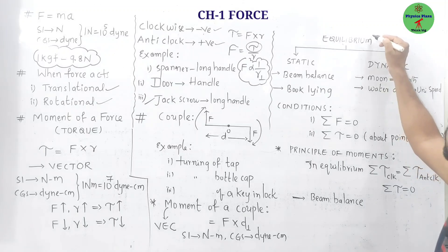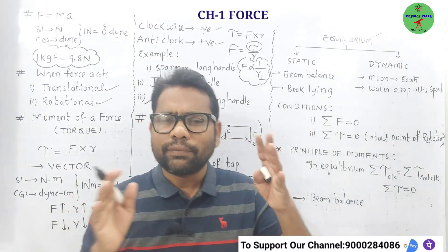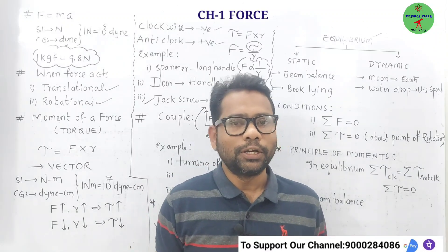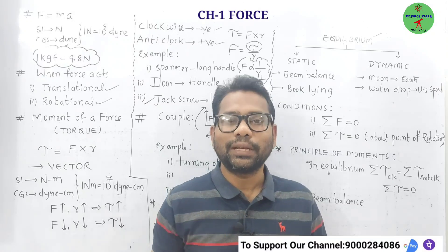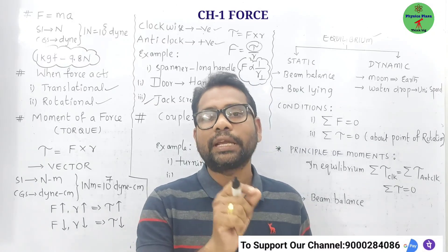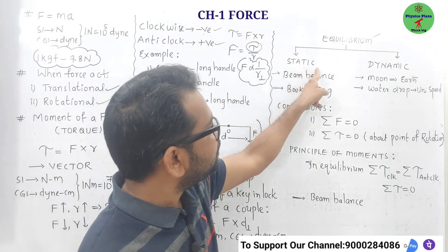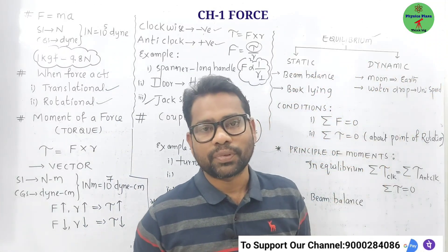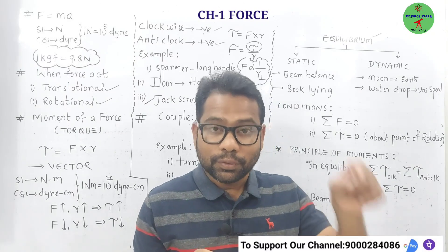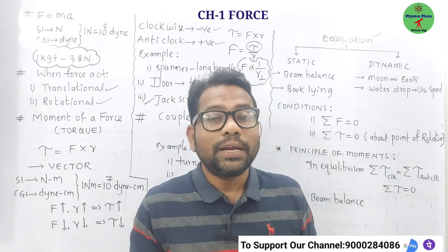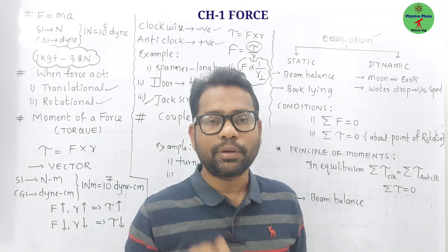Now, come to equilibrium. What is equilibrium? Several forces acting on a body do not change either its state of rest or state of uniform motion — then the body is said to be in equilibrium. We have two types: static equilibrium and dynamic equilibrium. In static equilibrium, the forces acting on a body do not change its state of rest — the body remains at rest.